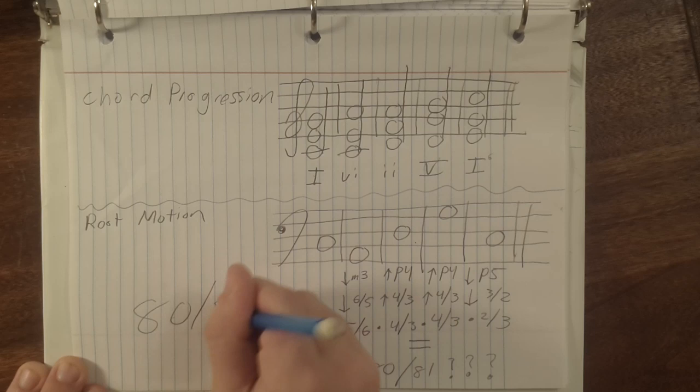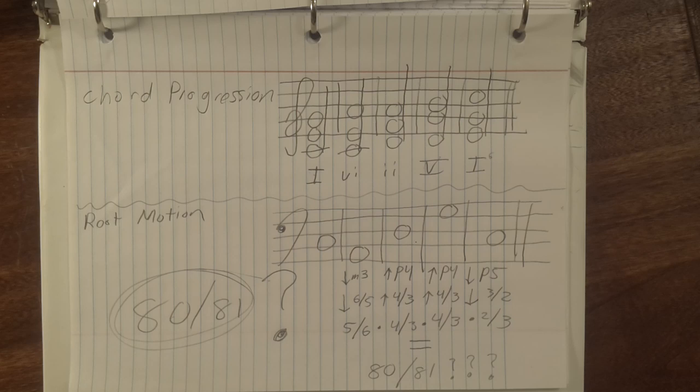Tiny, nearly 1 over 1 intervals like 80 over 81 are referred to as commas, and often show up in just intonation as the difference between two important ratios. This chord progression drifts by that amount every time through, hence the term chromatic drift.